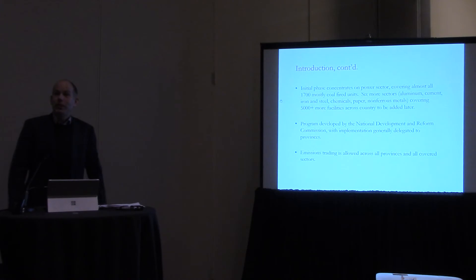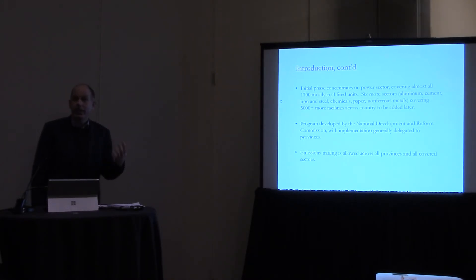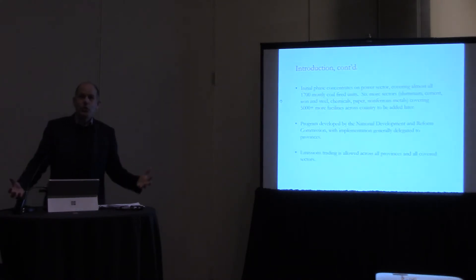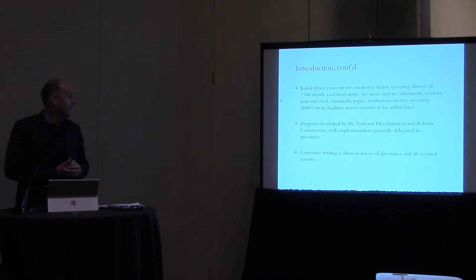So again, the scale of the system is just massive. We're thinking that the initial phase alone will cover 1,700 coal-fired power plants. That's a lot of coal. Later we'll see a bunch of other sectors coming in. So later there will be 5,000 or more facilities in the particular system. If you are an institutions nerd, which is very important if you're working on Chinese issues, the program is developed by the NDRC, but implementation is largely delegated to the provinces, and the political economy of this is really important here. Trading is allowed across provinces and across covered sectors. Initially there's only one sector, but later the idea is there will be trading across sectors, across provinces.